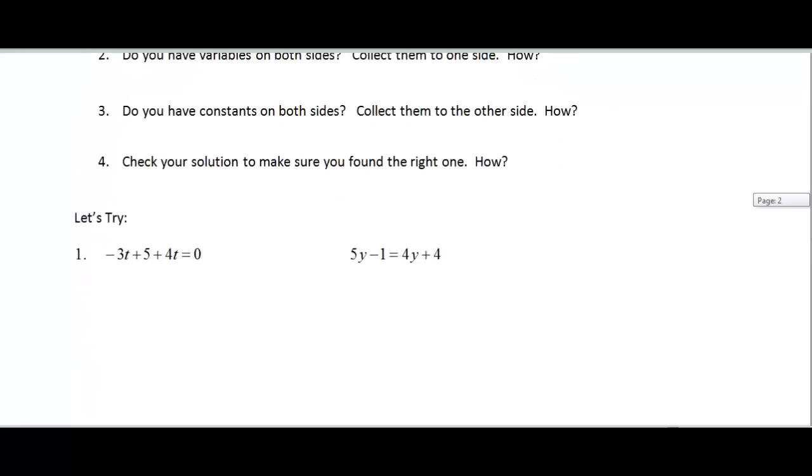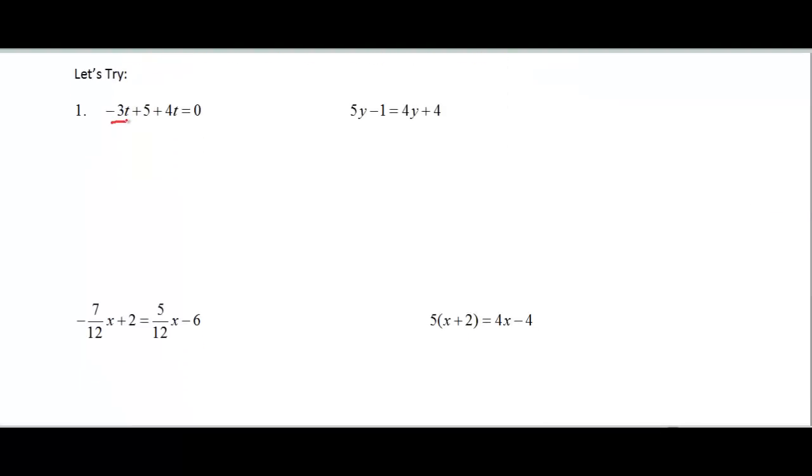So let's look at our examples here. I have like terms on the left-hand side, so I need to combine those like terms first of all. So negative 3t plus 4t will be t plus 5 equals 0.